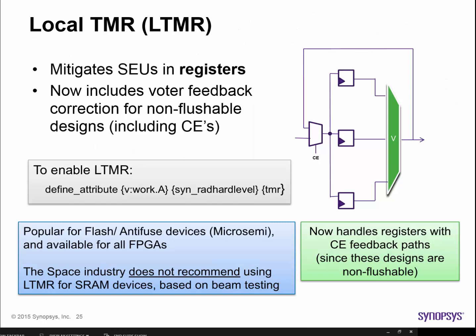Let's take a moment to look at the different types of TMR. The first type is local TMR or LTMR. This is TMR that protects registers from SEUs. LTMR finds popular use in anti-fuse and flash devices such as those available from Microsemi. Simplify Premier allows you to specify where in the design you'd like to apply LTMR using special attributes. Registered circuitry with clock-enabled feedback paths are handled correctly when the TMR circuitry is generated. Note that the space industry does not recommend using LTMR for SRAM devices based on beam testing results — local TMR just adds area to the design while not improving reliability in SRAM-based devices.